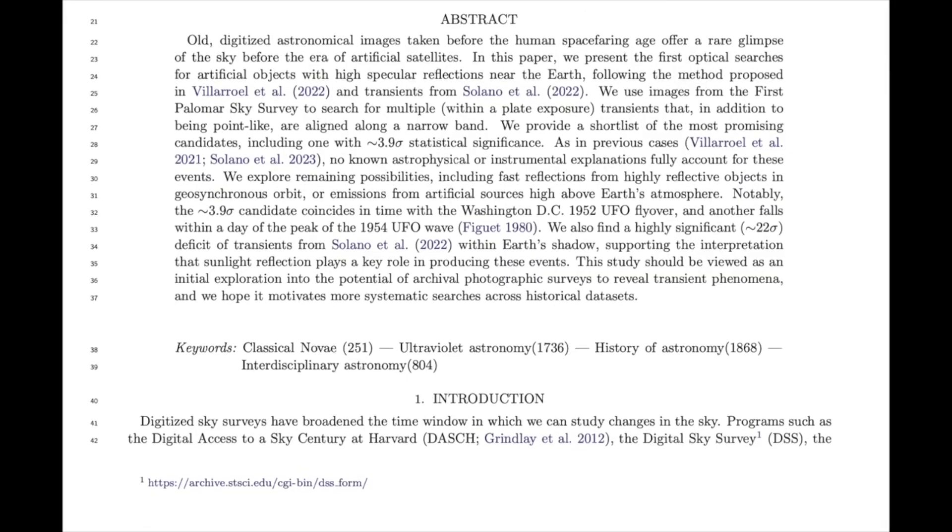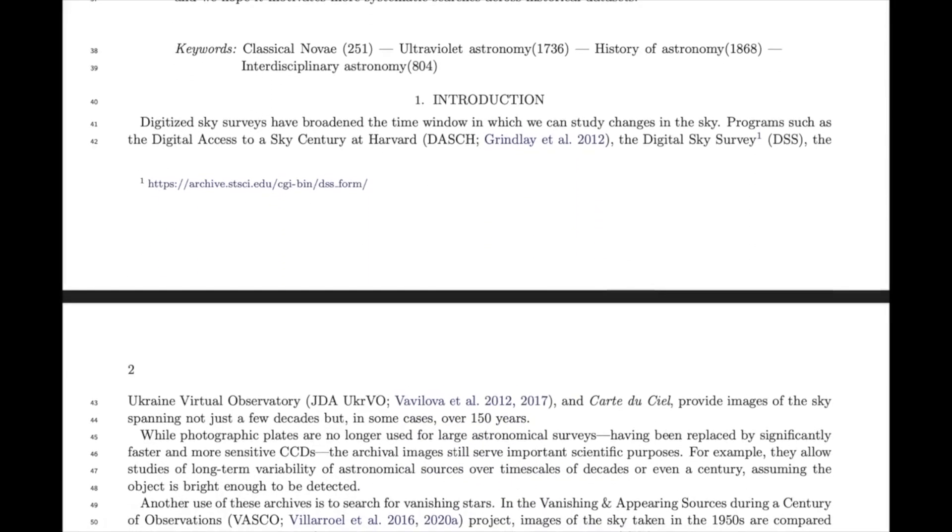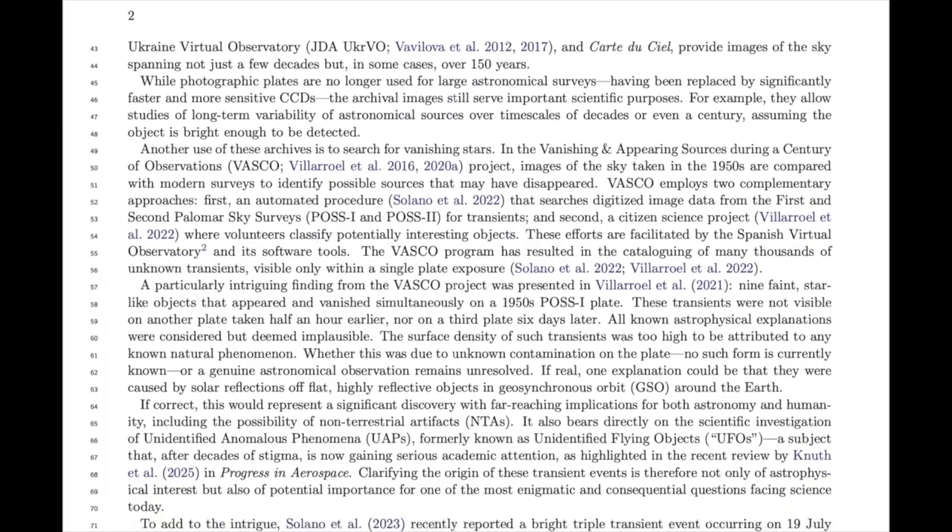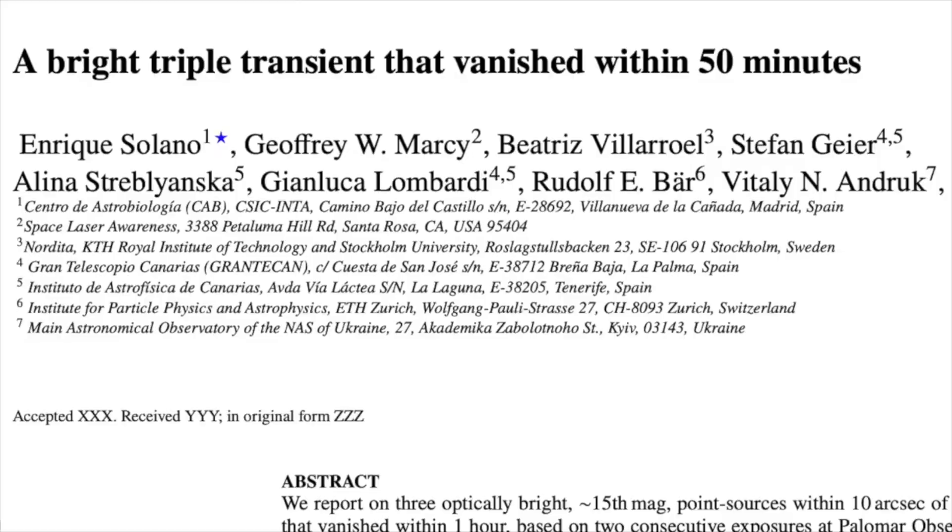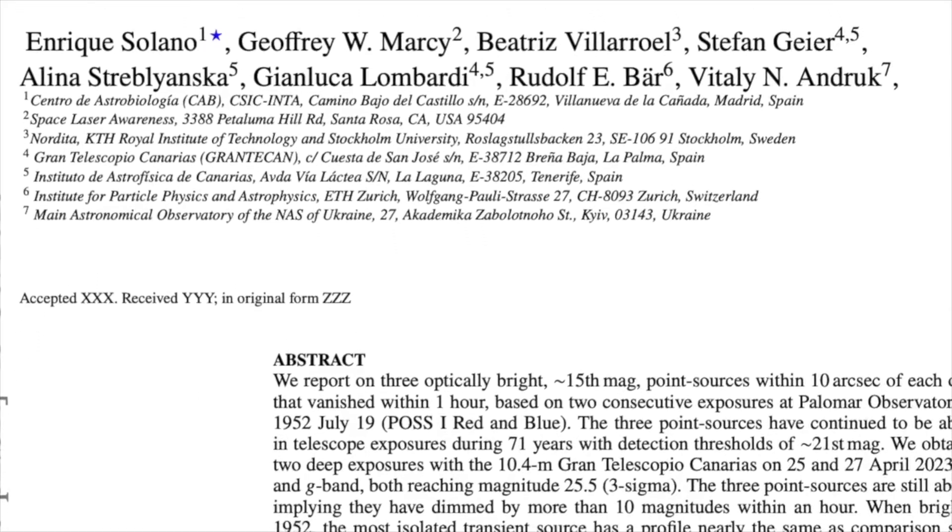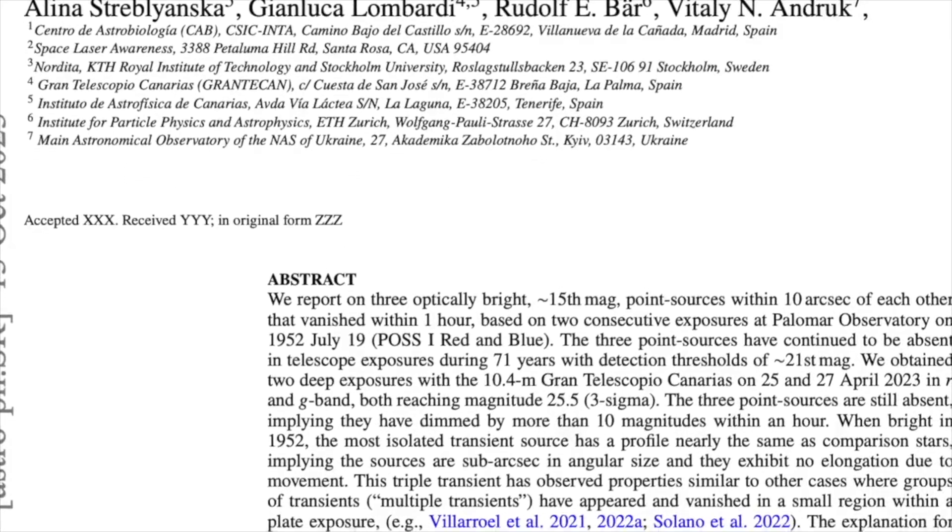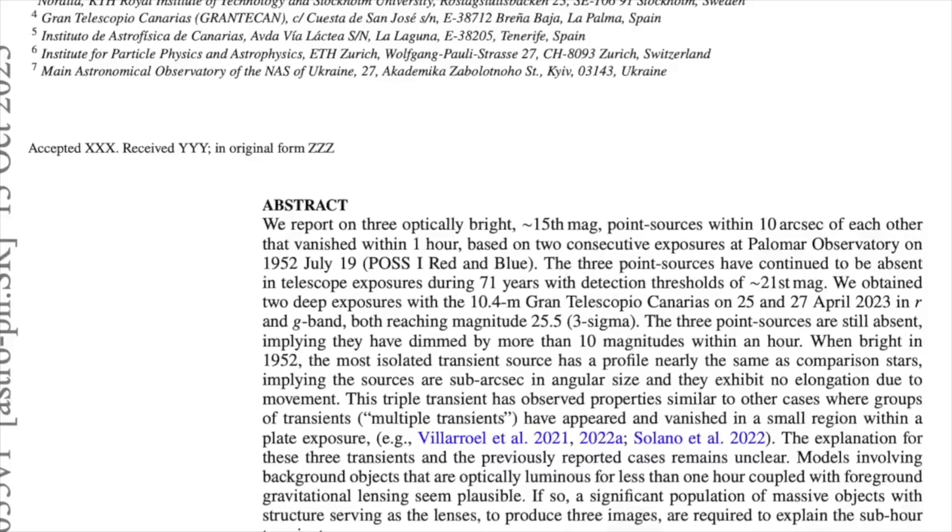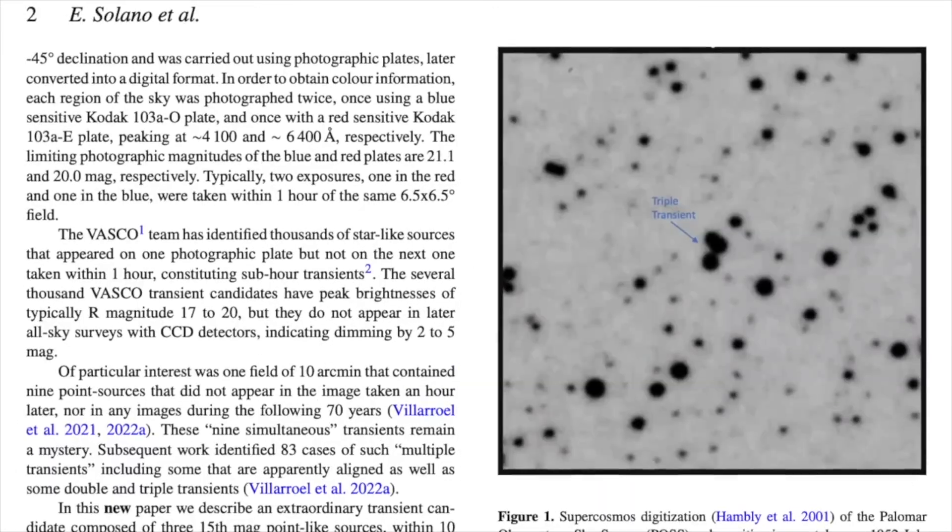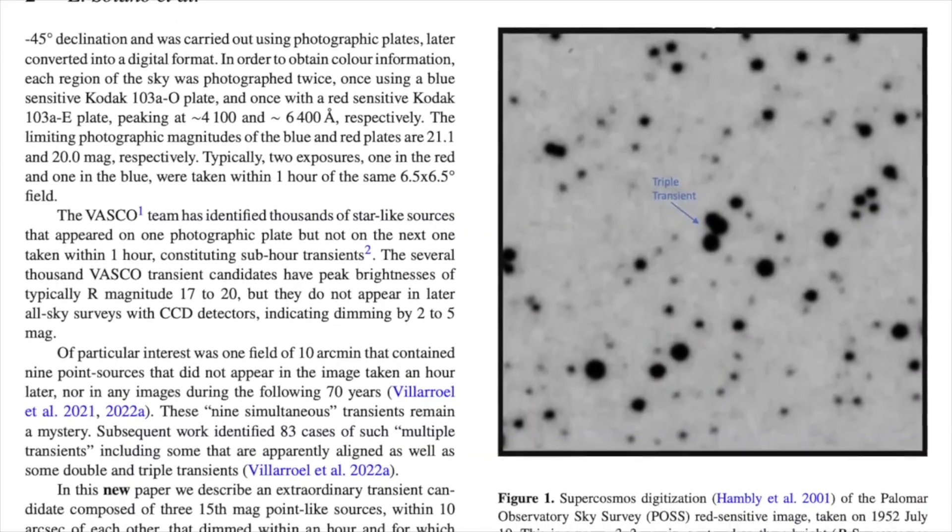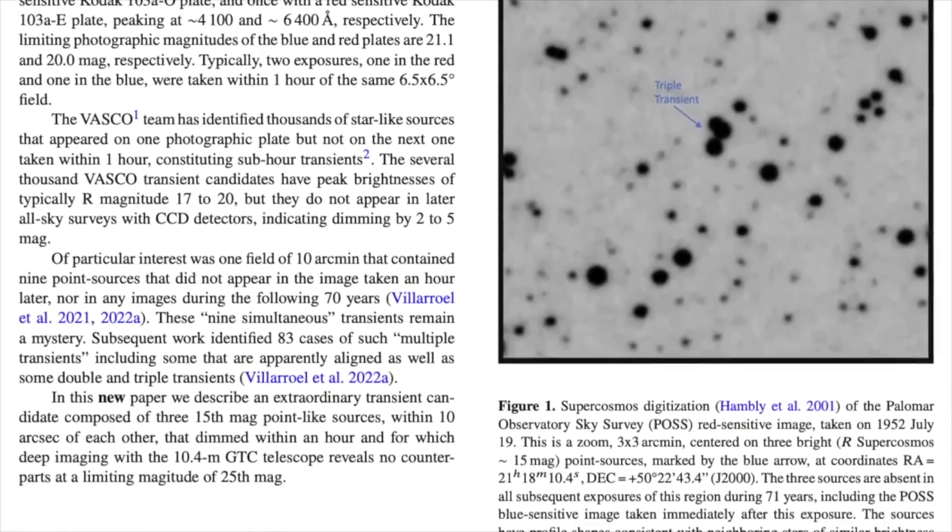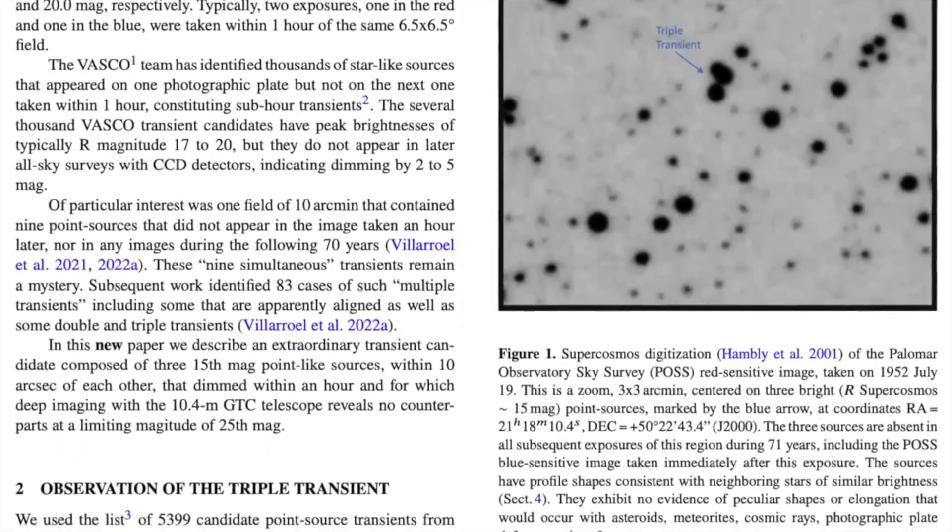One clue that we got was that we had some very interesting cases. We had a case where we saw a triple transit happening on the 19th of July 1952. It was found by my colleague Enrique Solano when he did this automatic search for transients, and he found some hundred thousands of transients. And then this triple transit was super beautiful, like three bright stars that appear and vanish. And as a coincidence, it happened on the date of the most famous UFO mass sighting, which happened in Washington D.C. on two consecutive weekends.